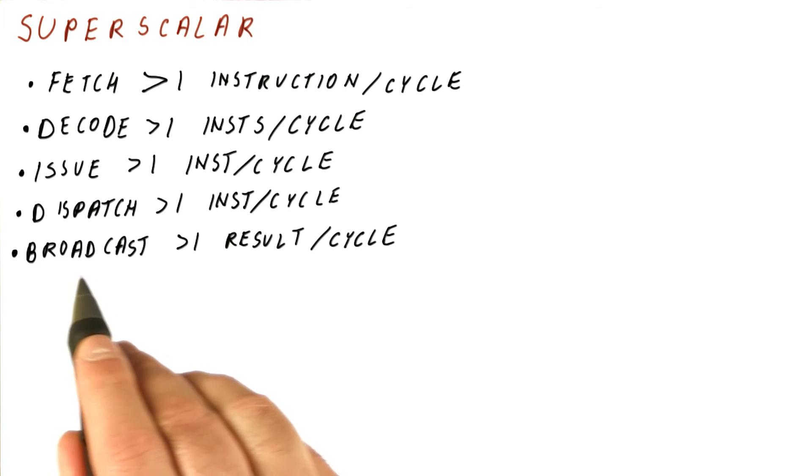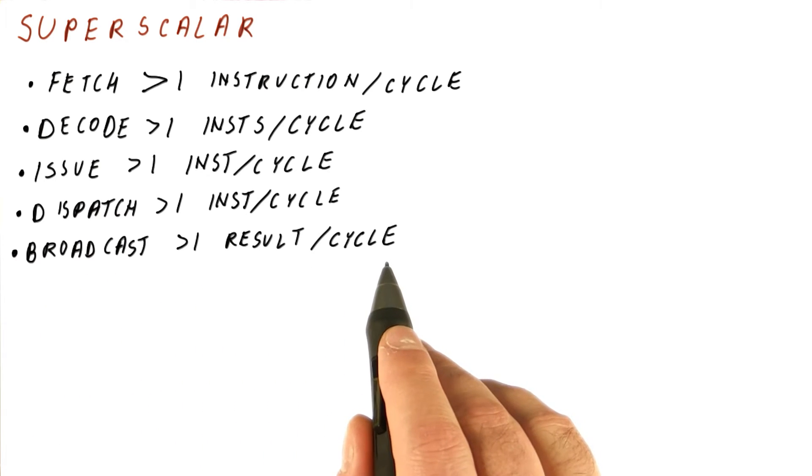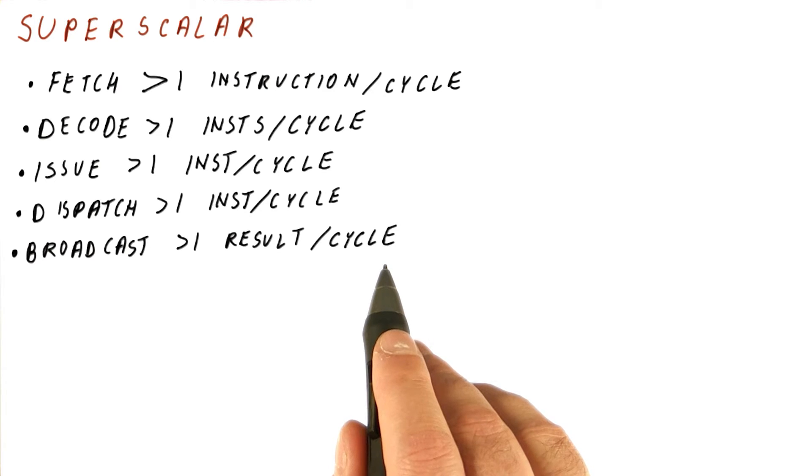Then we need to be able to broadcast more than one result per cycle. This involves not only having two broadcast buses or three broadcast buses, but also every reservation station has to compare its tags that it's waiting for to every one of the buses because in any given cycle, we could have any of the buses producing our results.